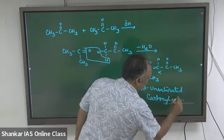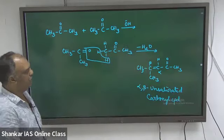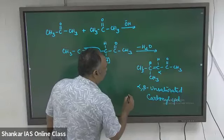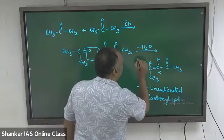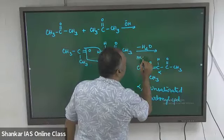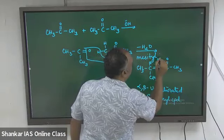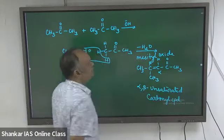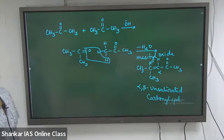When acetone is used, the product has a general name and it is called mesityl oxide. Mesityl oxide is the condensation product of acetone.